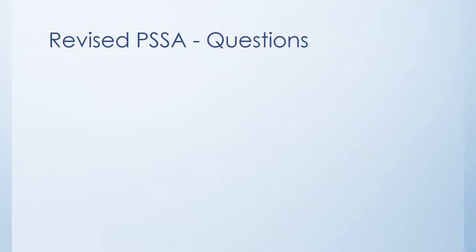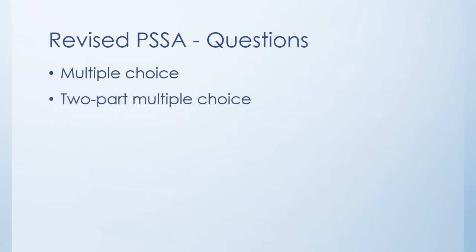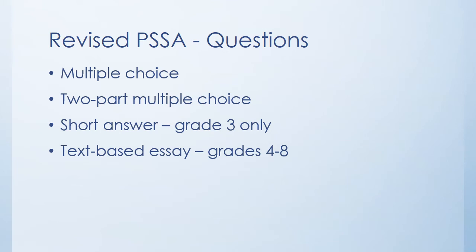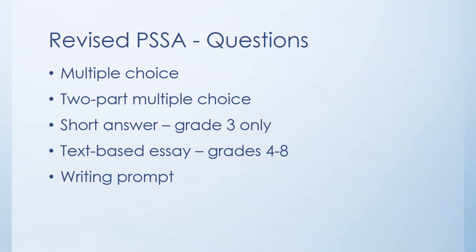Your students will see four types of questions on the PSSA, with a slight difference between 3rd grade and the other grades. All students will see multiple choice questions in which they select the best answer from a choice of four possible answers. They will also see a new two-part multiple choice in which they answer part 1 and then answer part 2 based on how they answered part 1. 3rd graders will see a short answer question in which they write a paragraph to demonstrate their understanding of a text. 4th through 8th graders will not see a short answer question—rather, they will see a text-based essay question in which they write a multi-paragraph essay showing their analysis of a passage. Finally, all students will see writing prompts in which they write in response to a prompt not related to a reading passage.